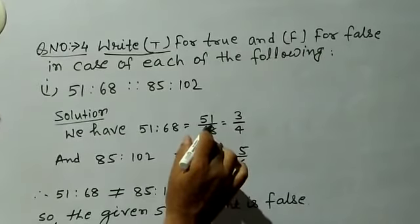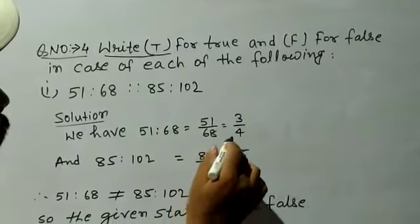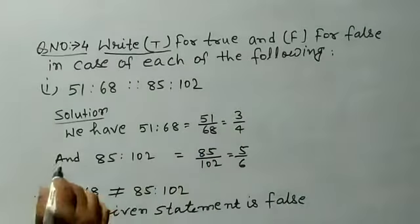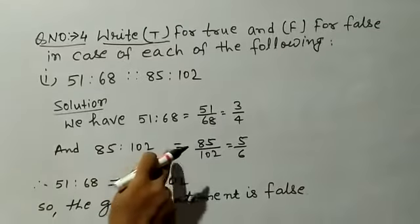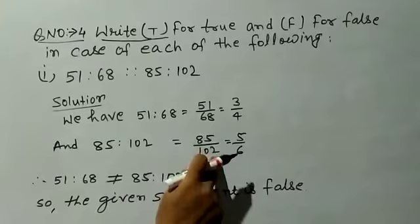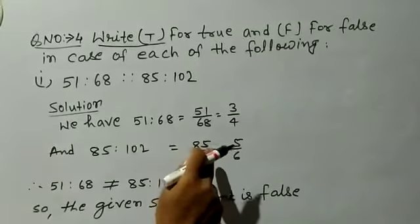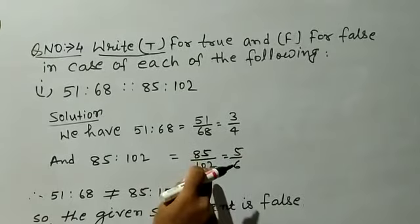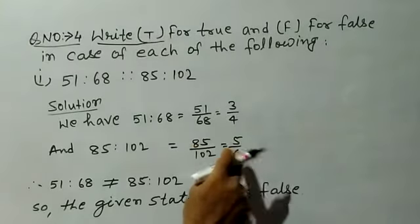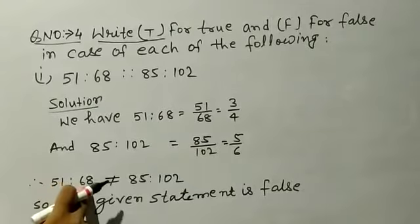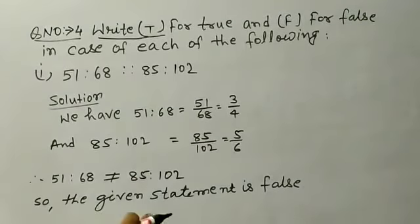For the next part: 51:68 in lowest terms — 51 divided by 17 equals 3, 68 divided by 17 equals 4, so 51:68 equals 3/4. And 85:102 — 85 divided by 17 equals 5, 102 divided by 17 equals 6, so 85:102 equals 5/6. Since 3/4 is not equal to 5/6, therefore 51:68 is not equal to 85:102, so the given statement is false.